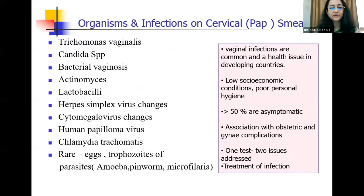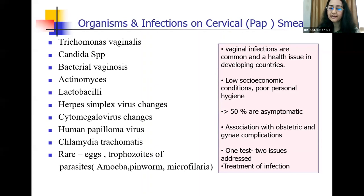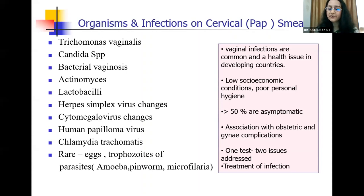So let's first deal with the organisms and infections that we can diagnose on cervical or pap smear. The most common organisms are Trichomonas vaginalis, Candida, bacterial vaginosis, Actinomyces, Lactobacilli as the normal flora, changes due to herpes simplex virus, cytomegalovirus, human papilloma virus — HPV I'll not be covering — Chlamydia trachomatis, and rarely eggs and trophozoites of various parasites. Vaginal infections are common and are a health issue in developing countries, more so because of the low socioeconomic conditions and poor personal hygiene. Although more than 50% are asymptomatic, they are associated with obstetric and gynae complications. Pap smear can address two issues: detection of epithelial abnormalities and timely treatment of infection.